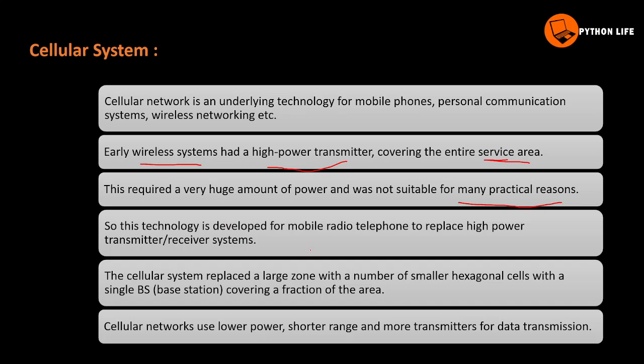Cellular technology was developed for mobile radio telephone to replace high power transmitter and receiver systems. The cellular system replaced a large zone with a number of small hexagonal cells, each with a single base station (BS), covering a fraction of the area.